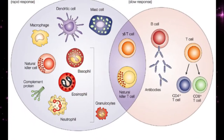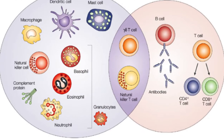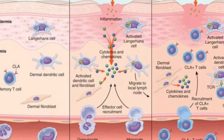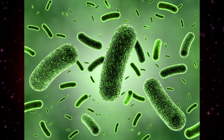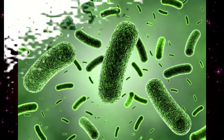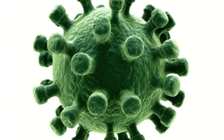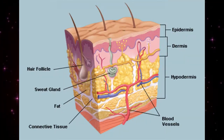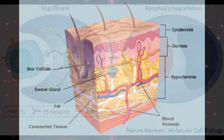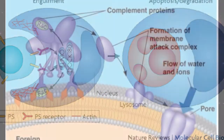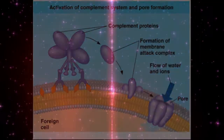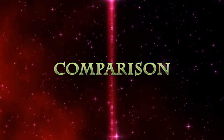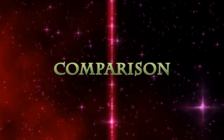Both innate and adaptive immunity are important to protect our body from infective organisms such as bacteria, fungi, viruses, etc. These mechanisms consist of physical barriers, cellular engulfment, antimicrobial proteins, etc. In this video, I'd like to discuss a comparison of these two processes.